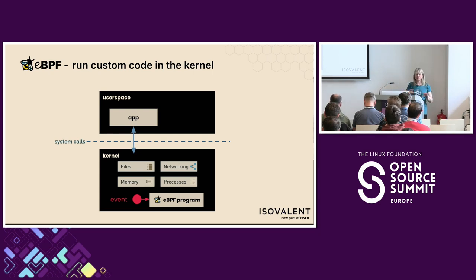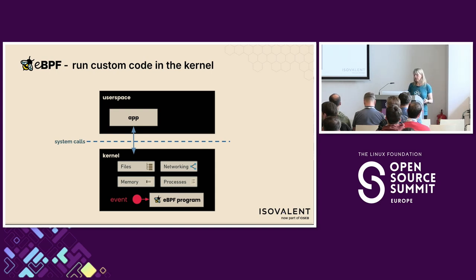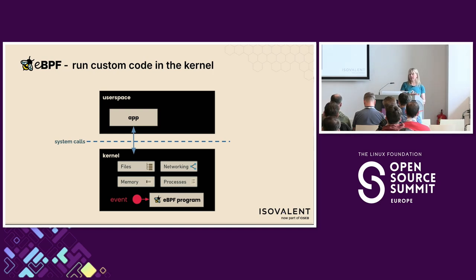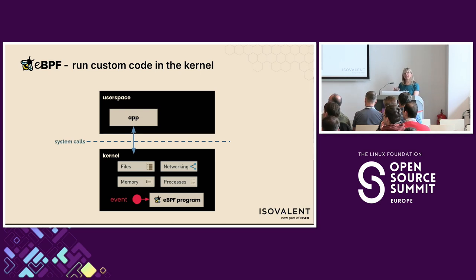With eBPF, we can write custom programs, load them into the kernel, and attach them to events. Those events could be opening a file, any function call in the kernel, any trace point, a network packet arriving on a network interface, or arriving at various different places in the networking stack. There are pretty much limitless events we can attach our eBPF programs to, and we can use those programs to observe or even affect the outcome of those events.